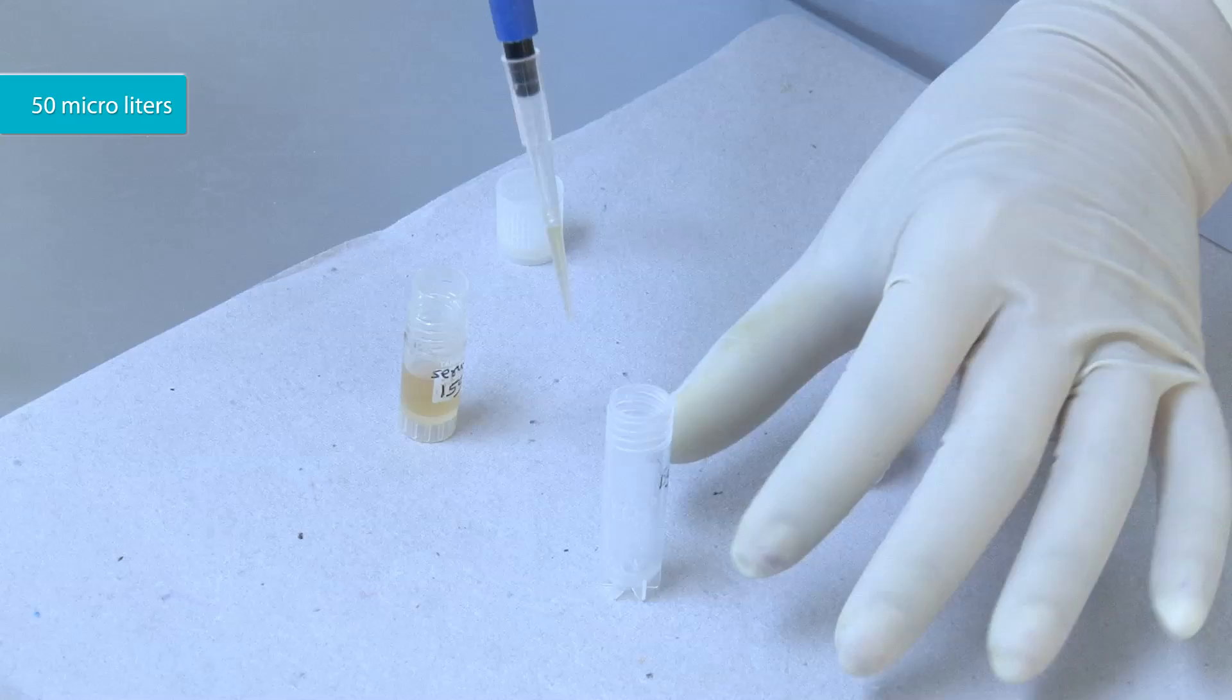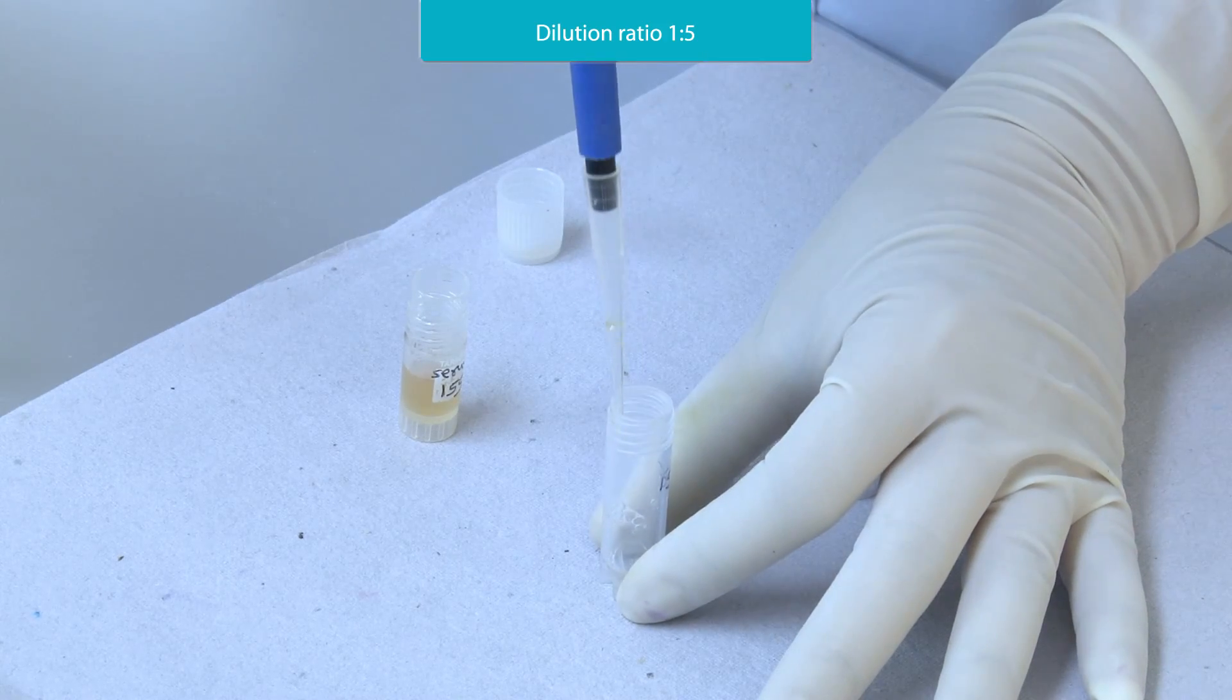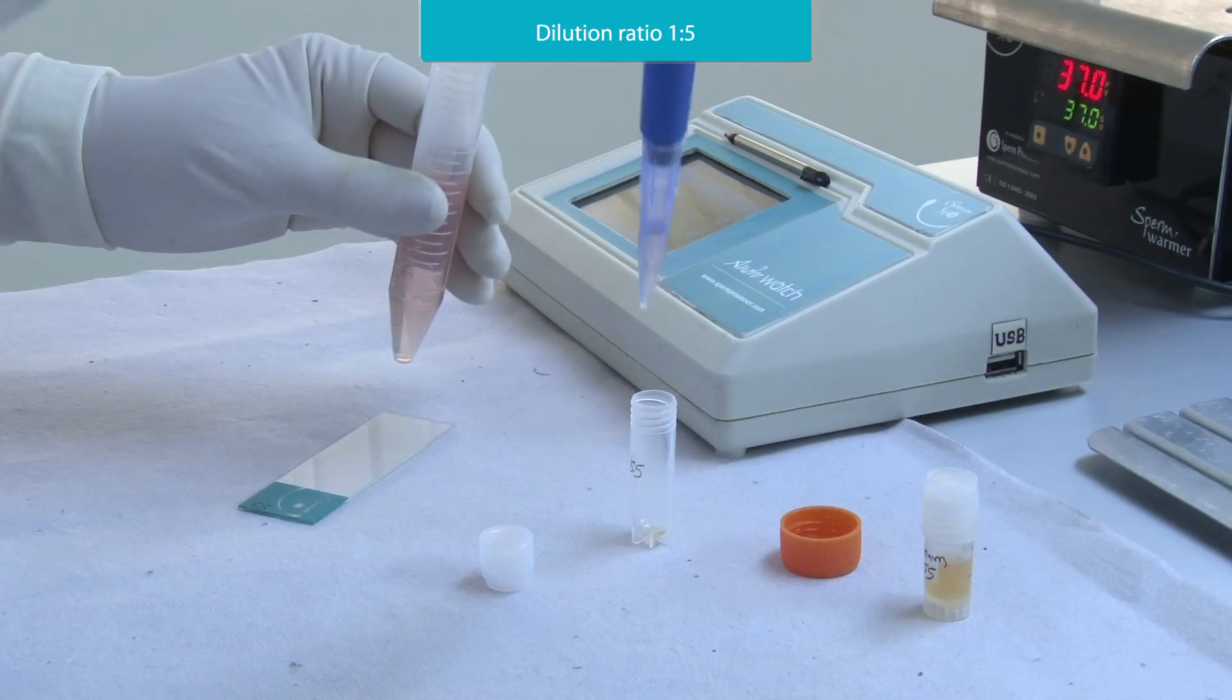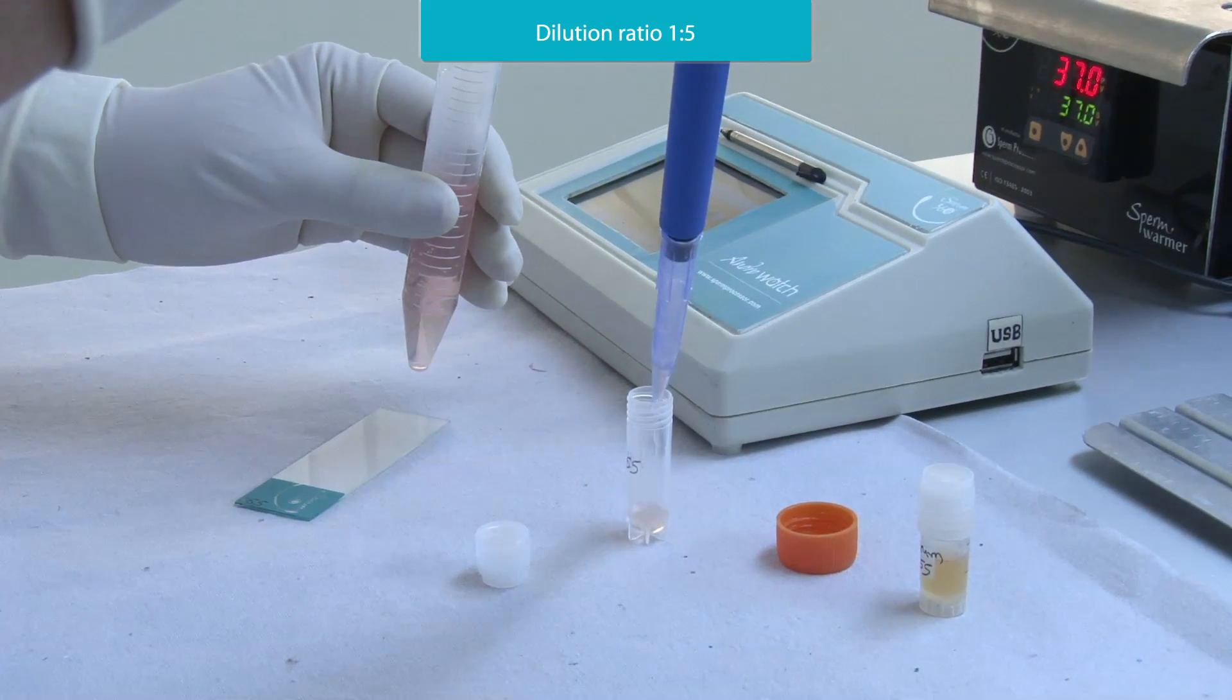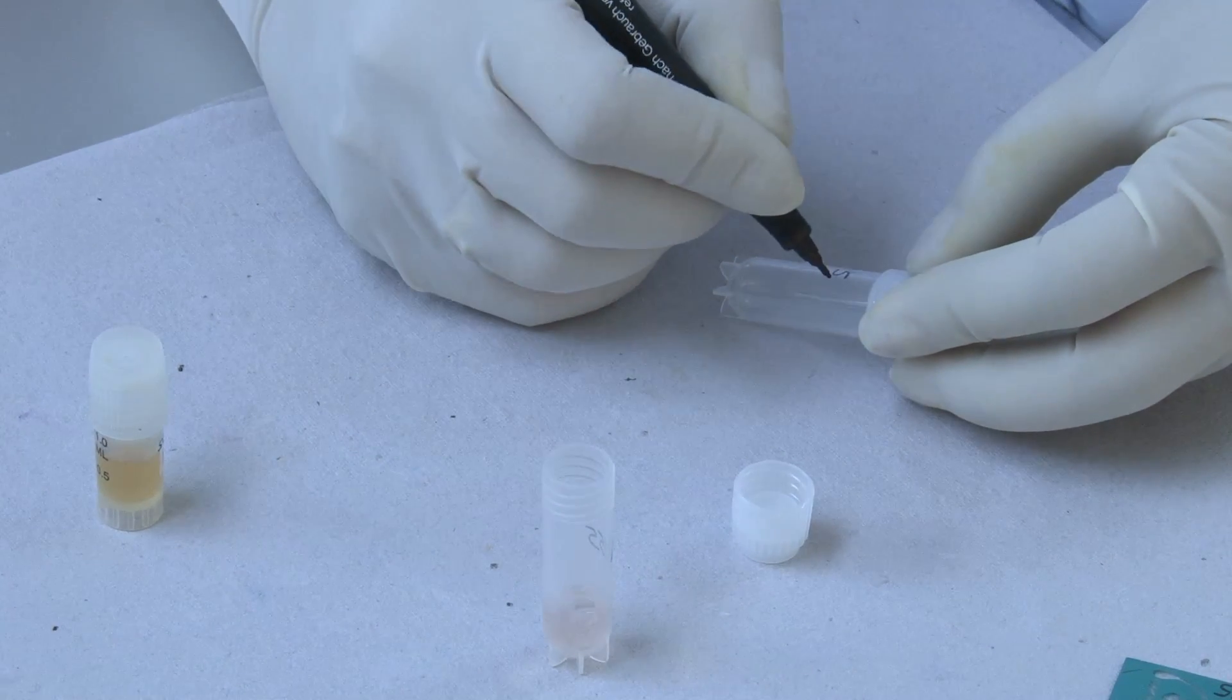Put 50 microliters of serum in the tube and dilute the same. Take another tube and label it with ID.